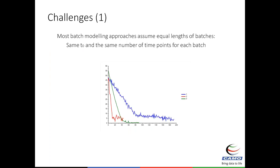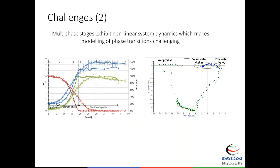One key challenge is that for real data, batches often have very different numbers of time points. Many methods assume the same number of time points and the same starting point. Even if the starting point is similar from a chemical perspective, the number of samples per batch can vary greatly, making it seem like nothing can be done with these methods directly.